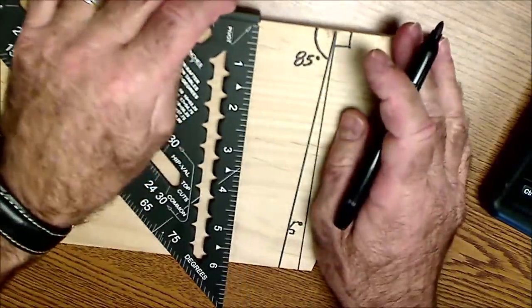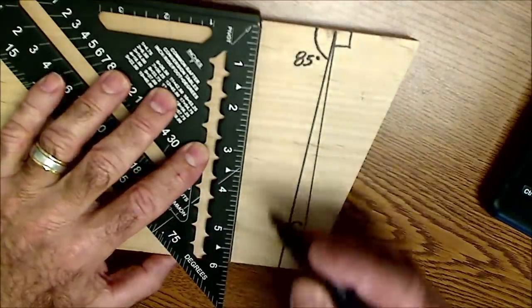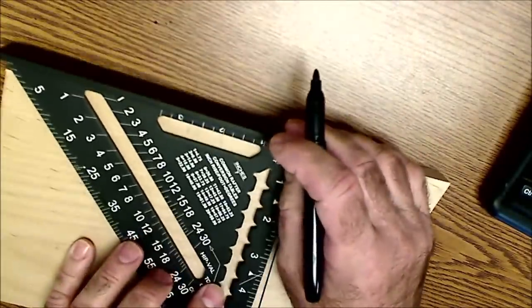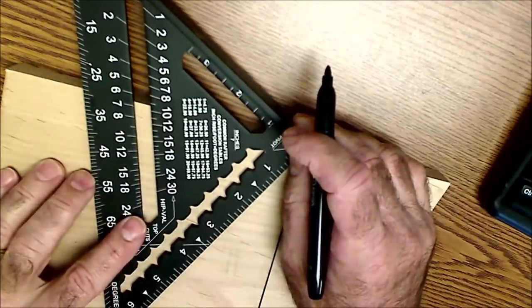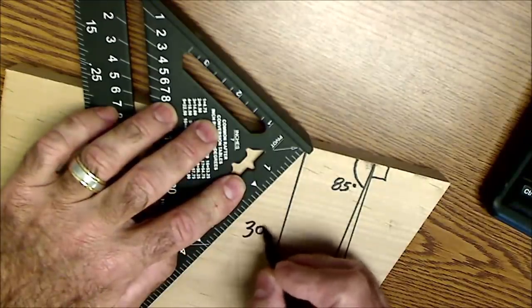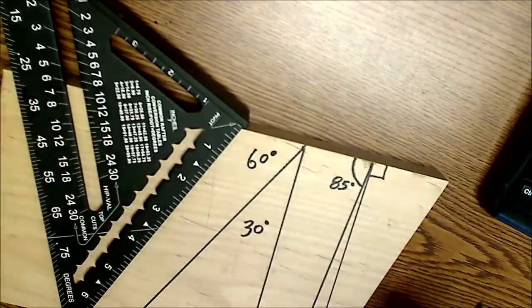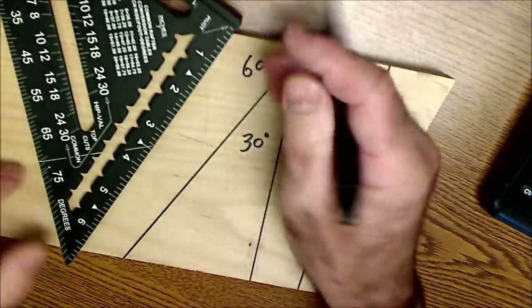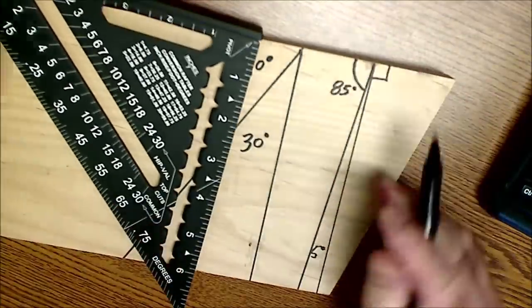So if I wanted to draw a 30 degree angle off of perpendicular, I would set this right here at 30, right there at 30, and draw that angle, and I know this angle is 30 degrees off perpendicular, therefore this angle right here would be 60 degrees. So that's how you're able to draw whatever angle you want, by knowing the complements of the different angles.